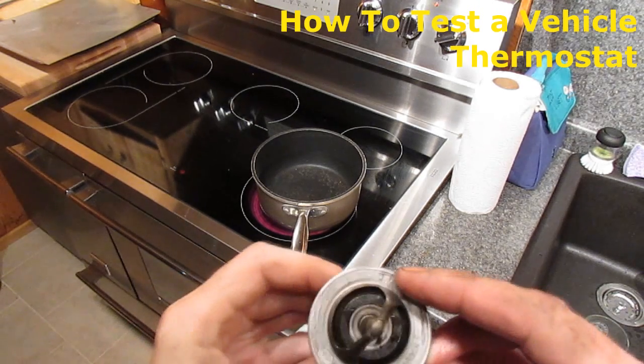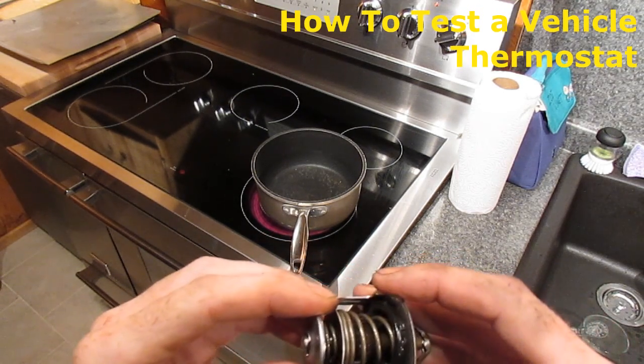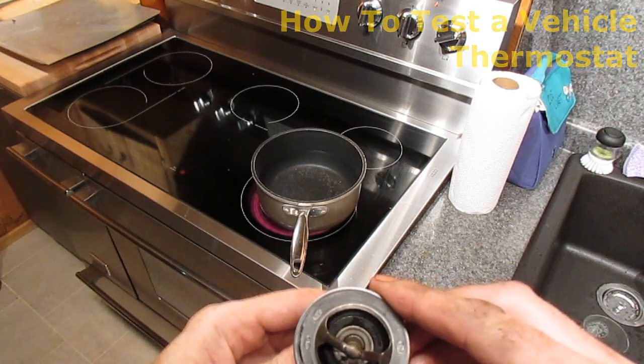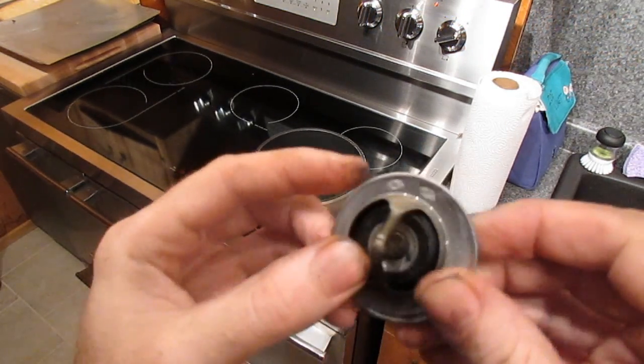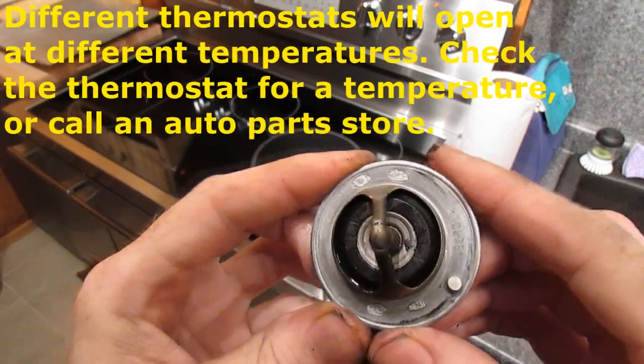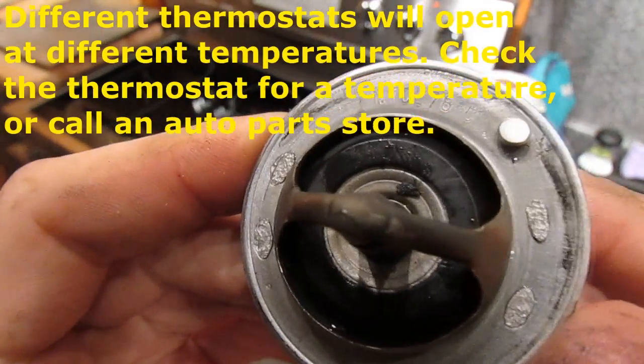So what we're going to do basically is we're going to put this thermostat in a pot of water heated up on the stove. And when this thing gets up to 78 degrees Celsius, which is what it says here on the thermostat, this should open like that.